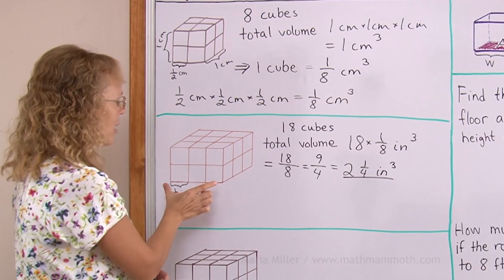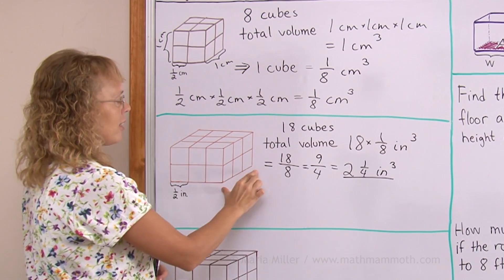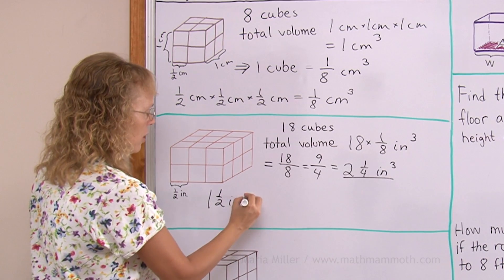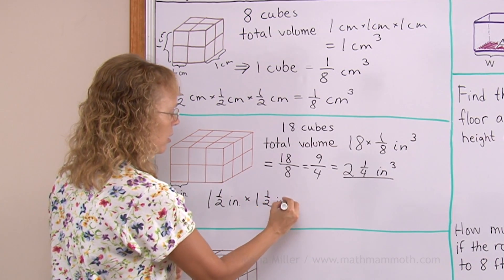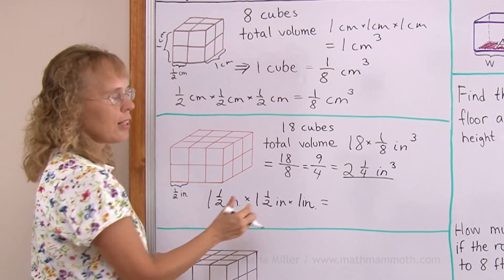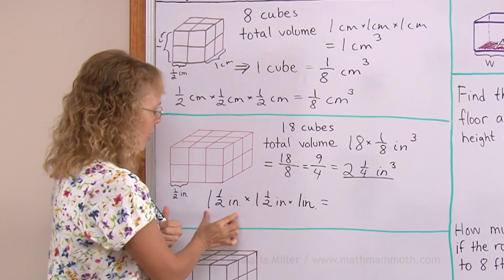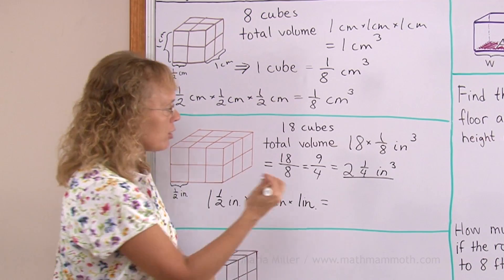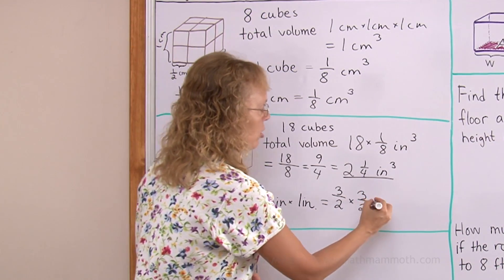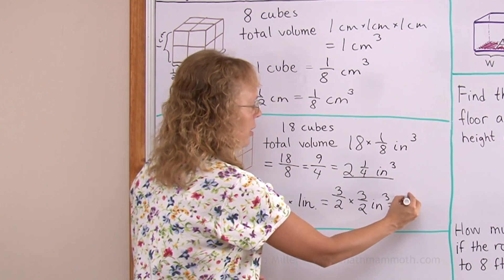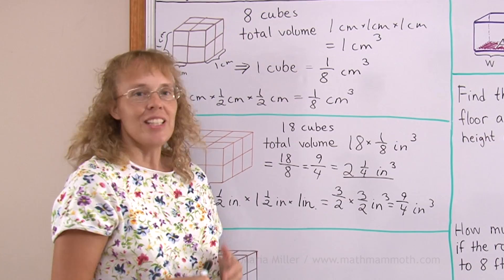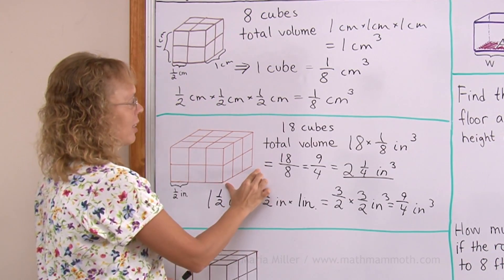Let's also calculate it by multiplying the width, depth, and height — these three dimensions. That gives us one and a half inches times one and a half inches times one inch. To multiply mixed numbers you need to change them into fractions: three over two times three over two times one. Inches times inches times inches makes cubic inches, and this is nine-fourths of a cubic inch, which is the same as two and one-fourth cubic inches. It worked out just fine to multiply the width, depth, and height.